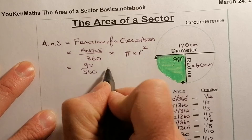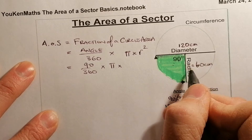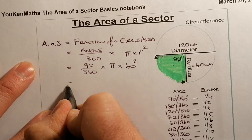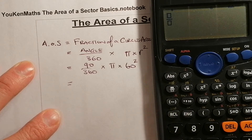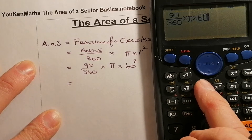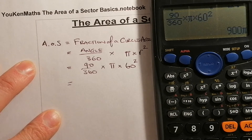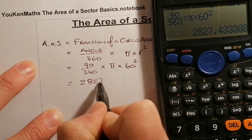So it's 90 over 360, multiplied by pi — we'll use the pi button — and the radius is 60 since the diameter was 120. We'll square that using the square button on the calculator. I'll use the fraction button and enter 90 over 360, then times pi, then times 60 squared. That gives me 900 pi. Pressing the SD button gives me 2827.4 centimetres squared, to one decimal place.